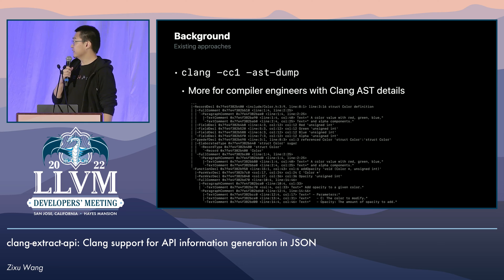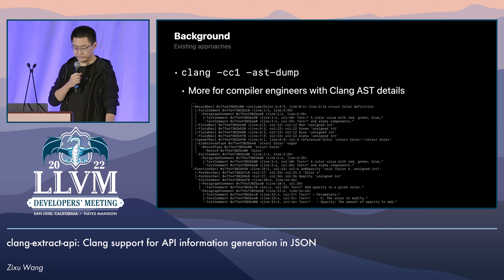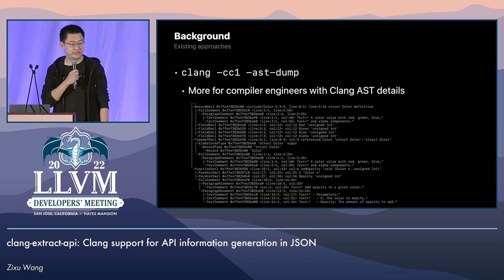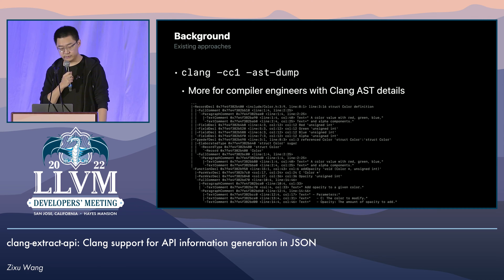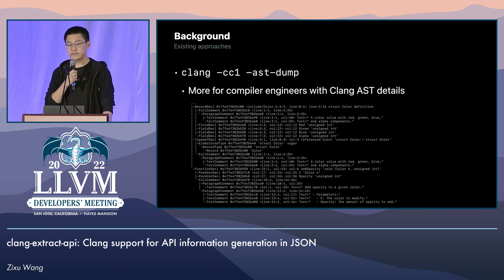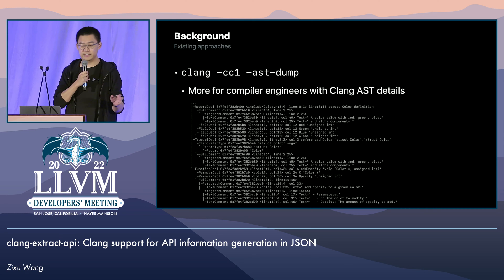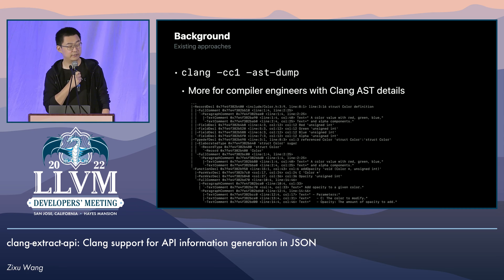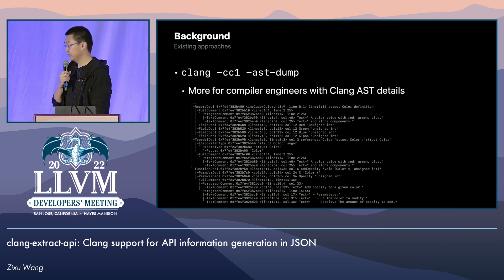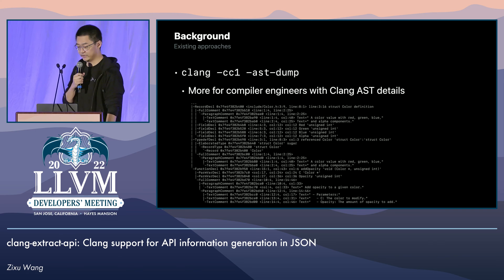We've looked into some existing ways that have similar purposes. First of all, Clang AST dump — it does print out the information of the APIs, as you can see from the output for my previous example. It also has the option to serialize in formats like JSON. But basically, it is more of a compiler engineer tool for debugging purposes, for having a look at what the actual AST looks like. So it contains all the low-level details that we are not really interested in.